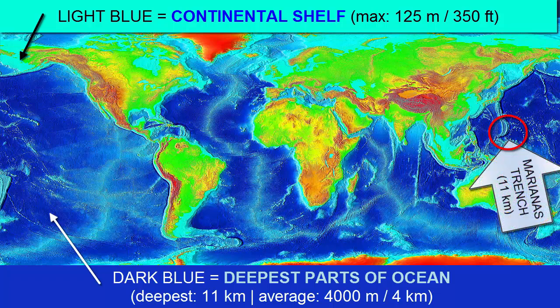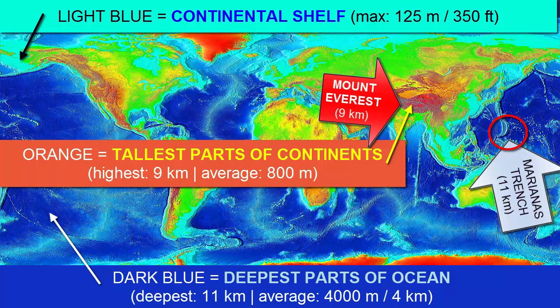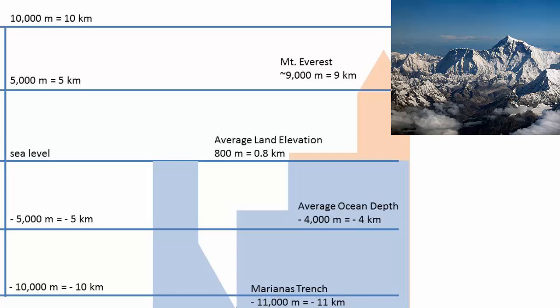These depths are, on average, 4,000 meters or 4 kilometers. The deepest part is the Marianas Trench at 11 kilometers. In comparison, when you look at the land, the higher elevation areas are marked orange and red. Most of the land is not at a high elevation — the average height of land above sea level is 800 meters. The highest elevations are found in the Himalayas; Mount Everest, the tallest, is approximately 9 kilometers above sea level. This graphic shows how those depths and elevations compare. We can clearly see that the average ocean depth is over 4 times deeper under sea level than the average continental surface is above sea level.